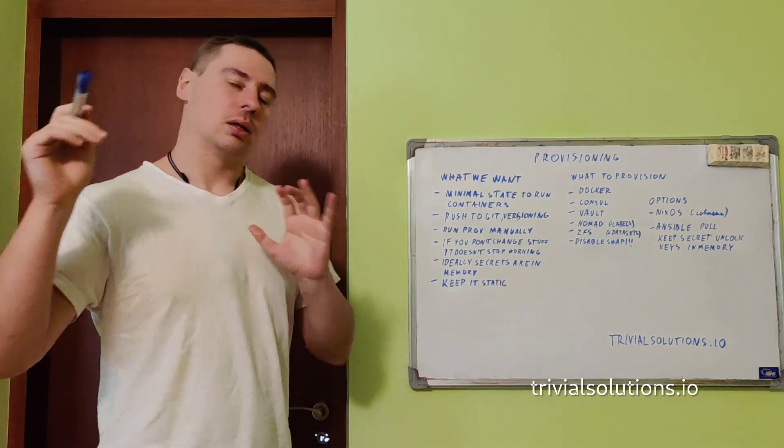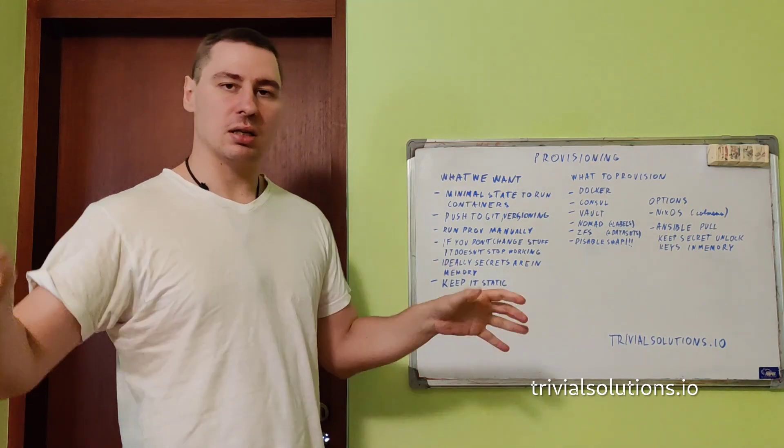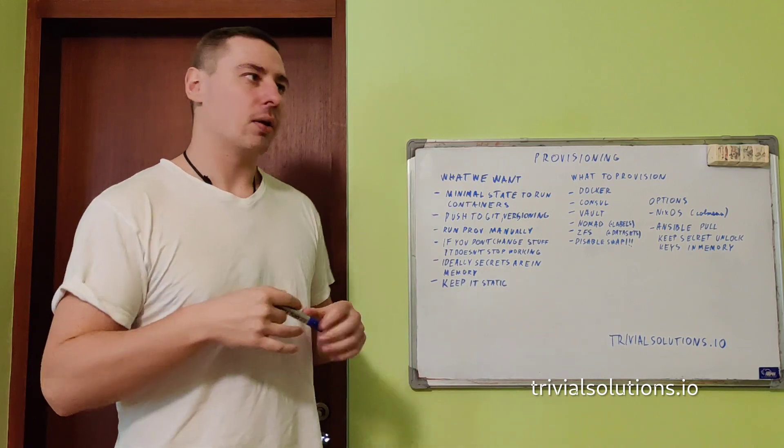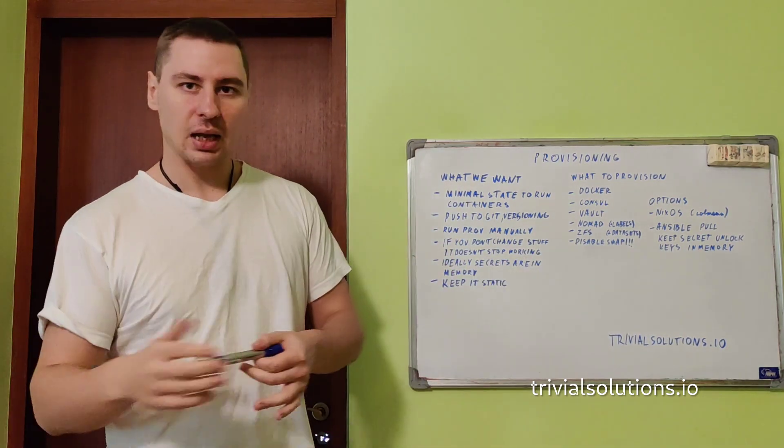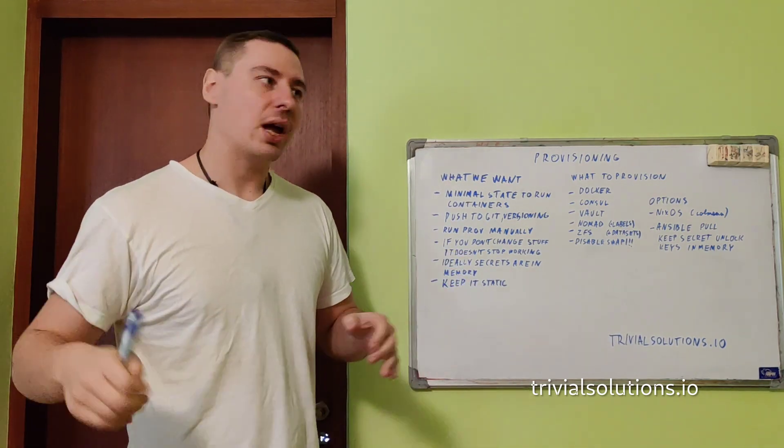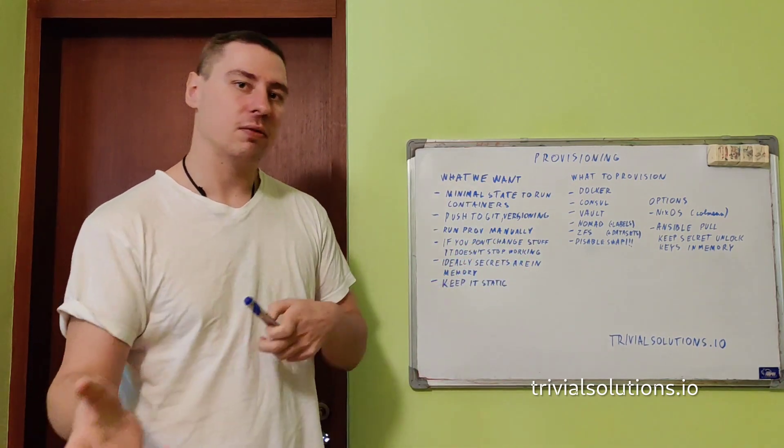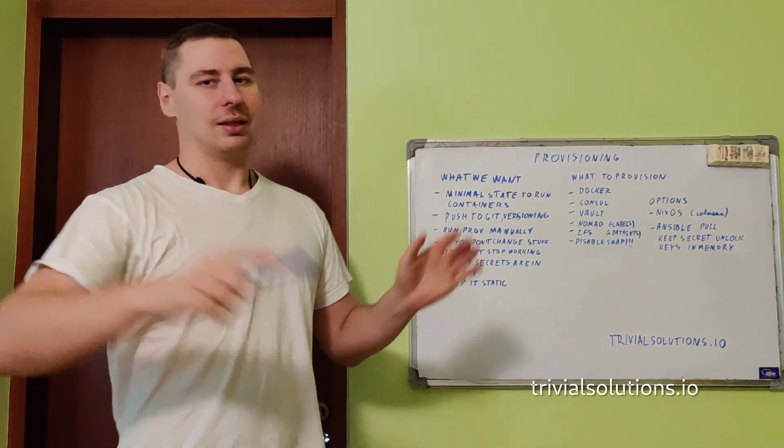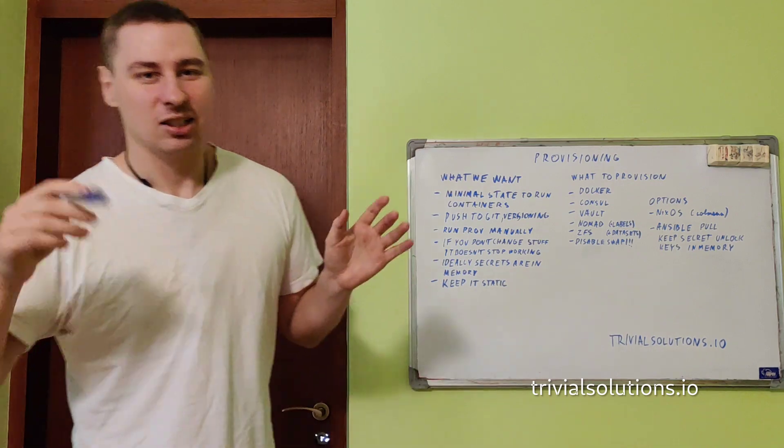Today I'll talk about what I do and what I want from provisioning. Provisioning is the process of when you configure your machines and you push to the git repository and machines catch the changes that they need. You don't need to SSH to every machine by hand and modify configurations by hand, start and stop containers by hand, or write systemd units by hand.